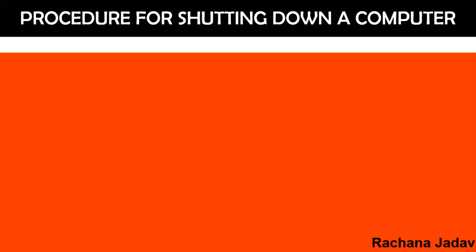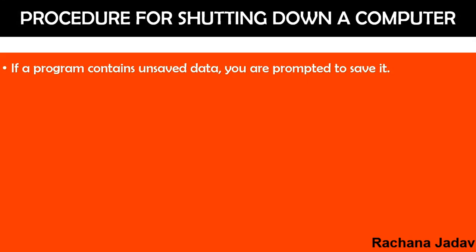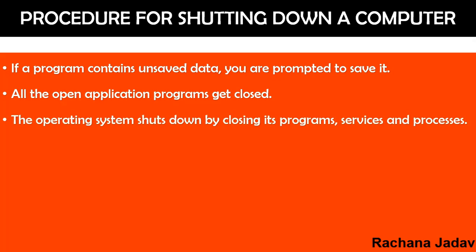After you provide your username and password, the desktop of the operating system appears and you can start working on the computer. Now, the procedure for shutting down — please keep in mind that if a program contains unsaved data, you will be prompted to save it. If you have a file open when you shut down, it will ask whether you want to save it. All open application programs get closed, and the operating system shuts down by closing its program services and processes.